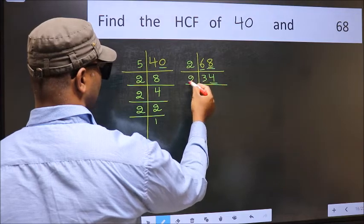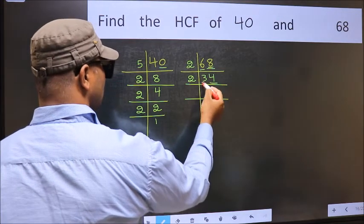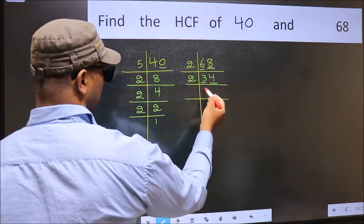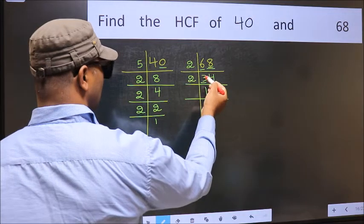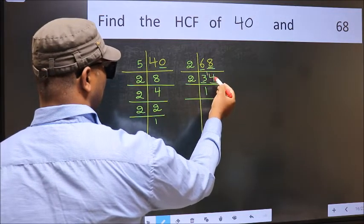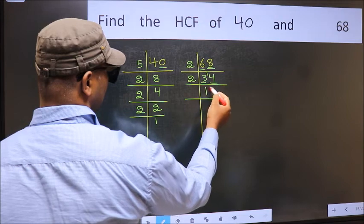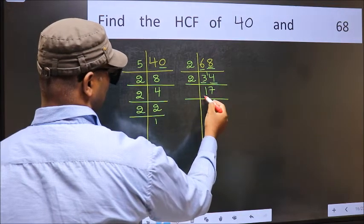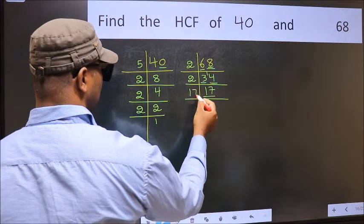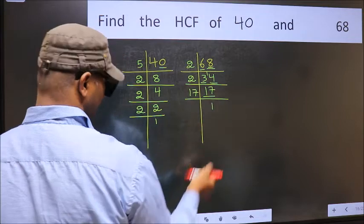Now last digit 4, even, so take 2. First number 3. A number close to 3 in the 2 table is 2 times 1 is 2, 3 minus 2 is 1, 1 carried forward is 14. When do we get 14 in the 2 table? 2 times 7 is 14. Now 17 is a prime number so 17 times 1 is 17.